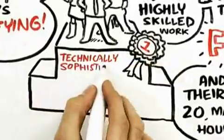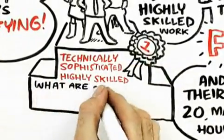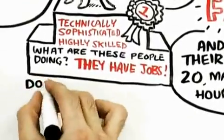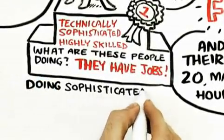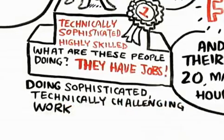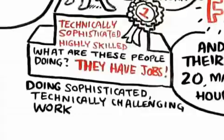Why are these people, many of whom are technically sophisticated, highly skilled people who have jobs - they have jobs, they're working at jobs for pay, doing challenging, sophisticated technological work - and yet during their limited discretionary time